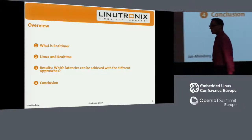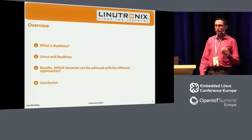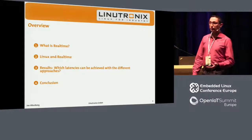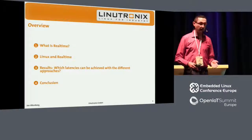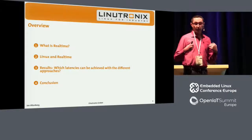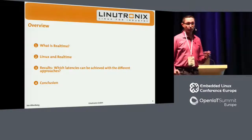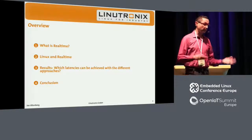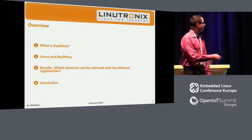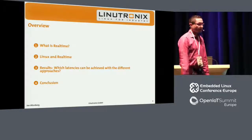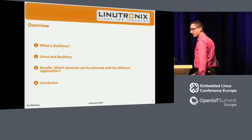We will also look into the results and the latencies you could basically achieve with a real-time Linux on a specific platform. We will look into a Cortex-A9 dual-core system and see which latencies could be achieved with different real-time Linux approaches. So this is basically what I'm going to talk about today. Now let's get started.